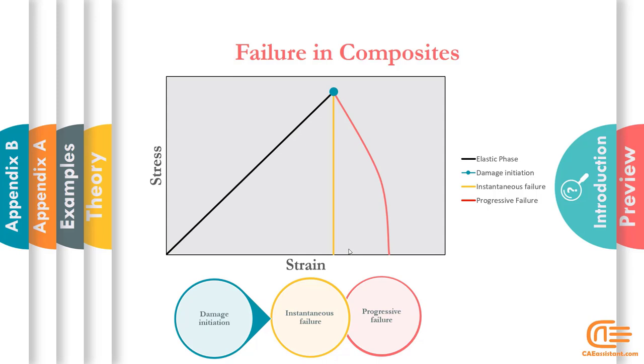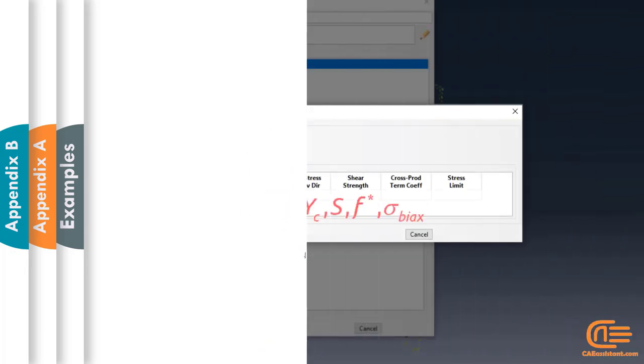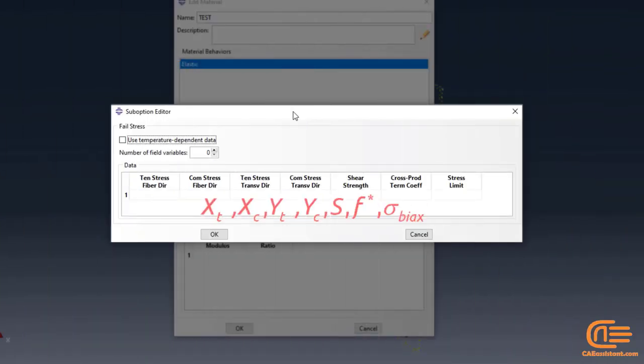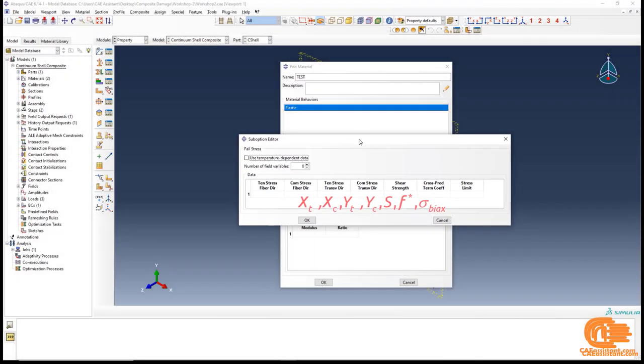A laminate should be designed so that its tendency for ply and delamination failure is minimized. Failure due to delamination is more insidious, as it is less predictable than ply failure. But ultimately, the laminate needs to be designed not to fail. And the bicycle stress limits. And the strain-based failure option defines tensile and compressive strain limits in the 1 and 2 directions, and the shear strain limit in the 1-2 plane.